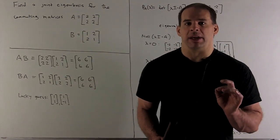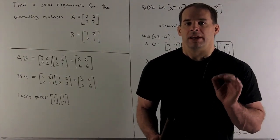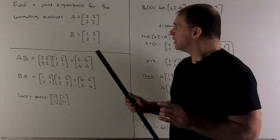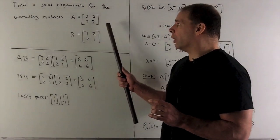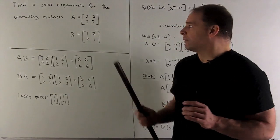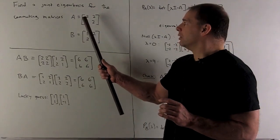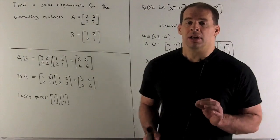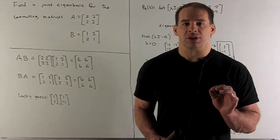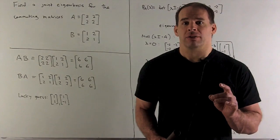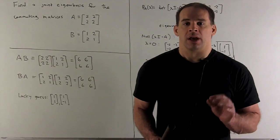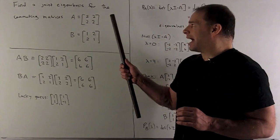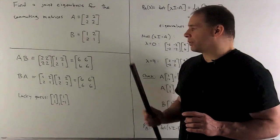How do you get your joint eigenbasis? Here we can get it by just being clever. If you notice, the sum of each row is going to be the same for each matrix. For matrix A we get 4, for matrix B we get 3. So the vector [1, 1] is going to be an eigenvector for both matrices, and the eigenvalue is just going to be the row sum — eigenvalue 4 for A and eigenvalue 3 for B.